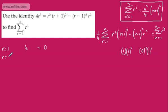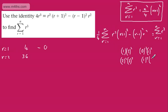Taking r equals 2: we get 2 squared times 3 squared, which is 4 times 9 equals 36. Substituting r equals 2 into the second part gives 1 squared times 2 squared, which is 4. We can already see the cancellation beginning — that term is minus 4.